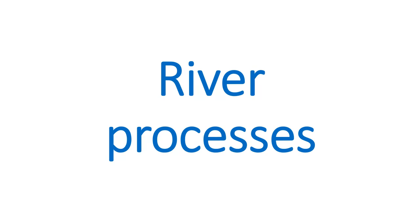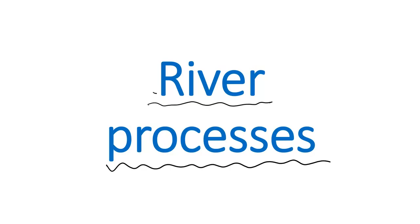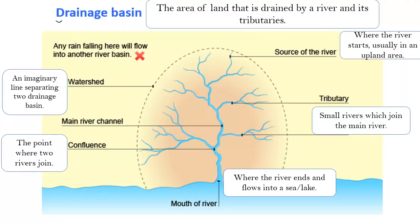We'll be looking at river processes, which is still part of our series on IGCSE geography. The first thing we're looking at is a drainage basin. A drainage basin is an area that is drained by a river and its tributaries. If you look at this diagram here, it represents a drainage basin.